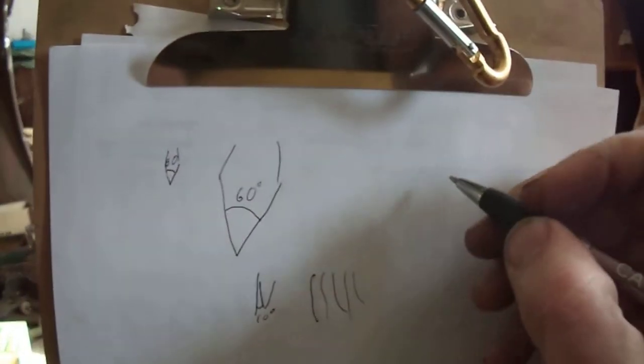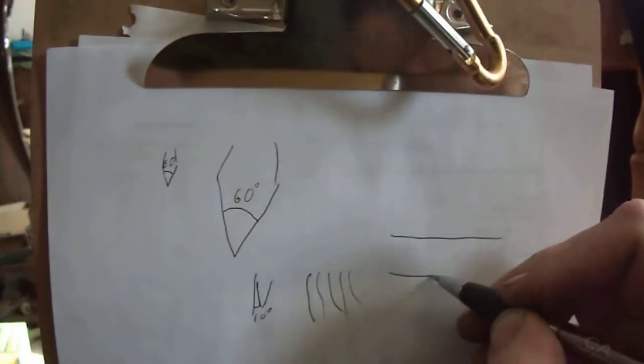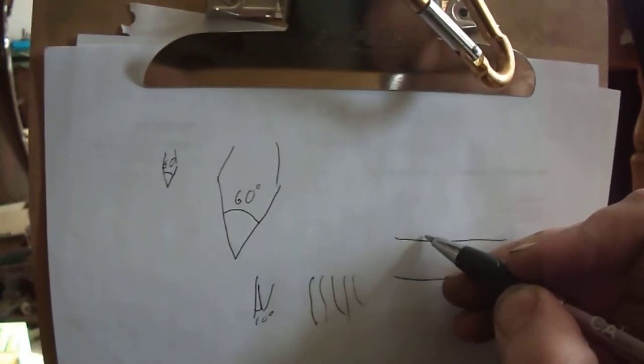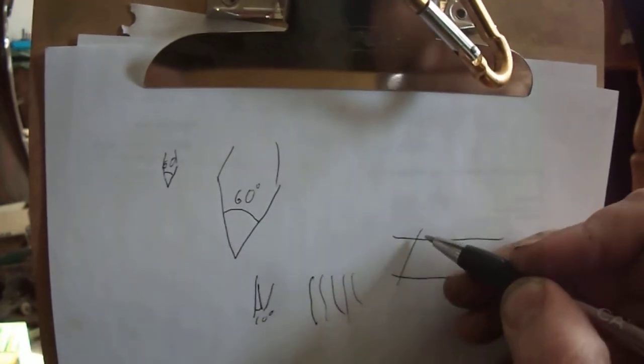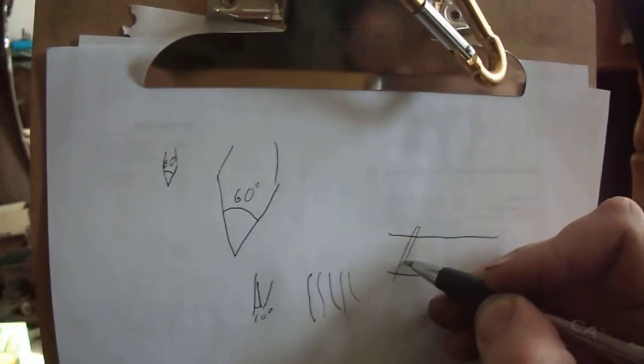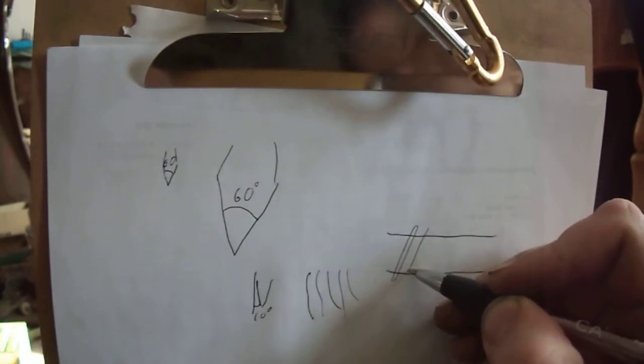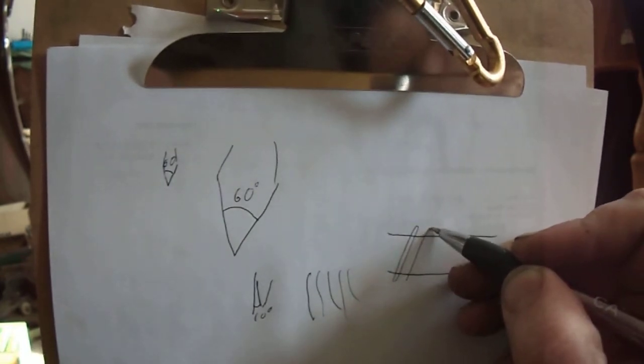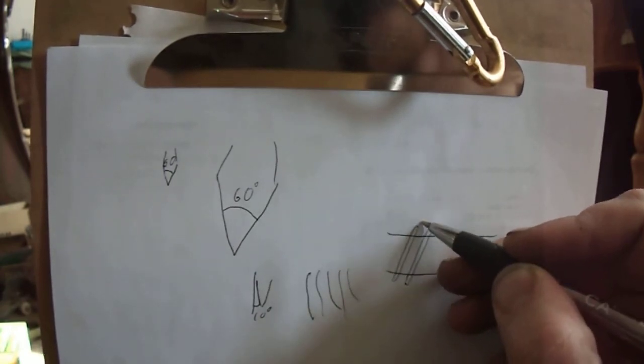Now, when you get into an Acme thread, whichever way you're going on it, it doesn't matter. But when you've got your shaft like this, your Acme threads, because they're quite coarse, are actually going like this. So, as you can see, you've got quite a bit of depth in here.